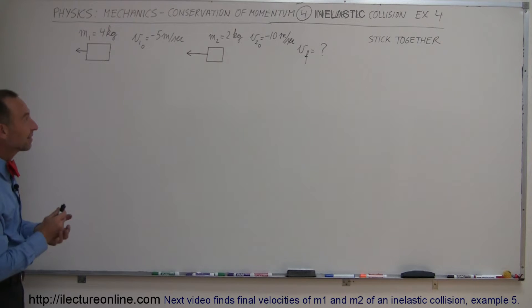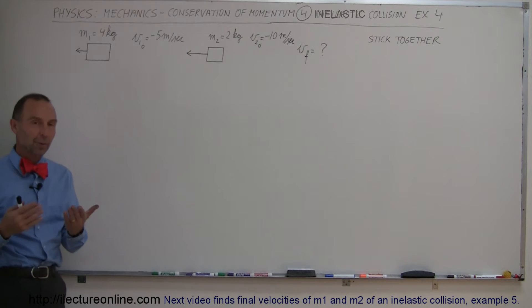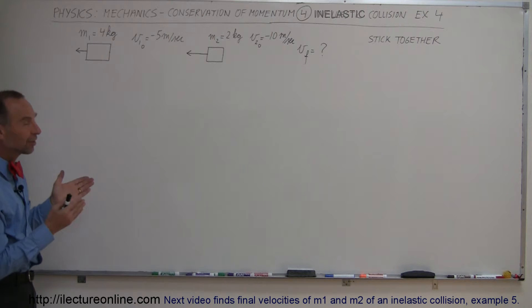Welcome to our lecture online and here's our next example of how we deal with conservation of momentum. In this case both objects have an initial velocity to the left. So this is an example to show us how to deal with negative velocities.